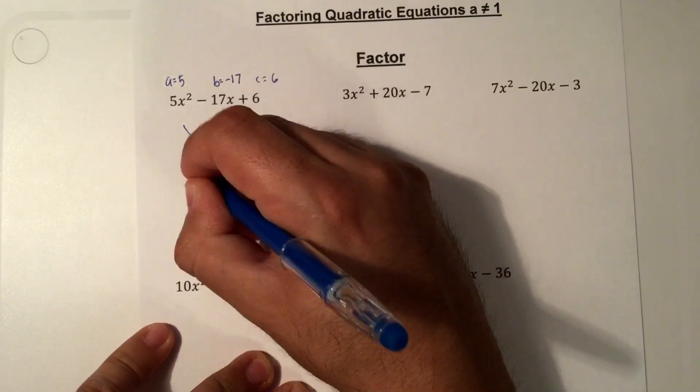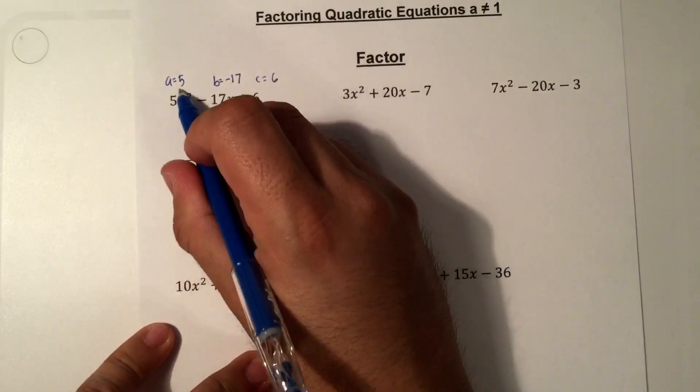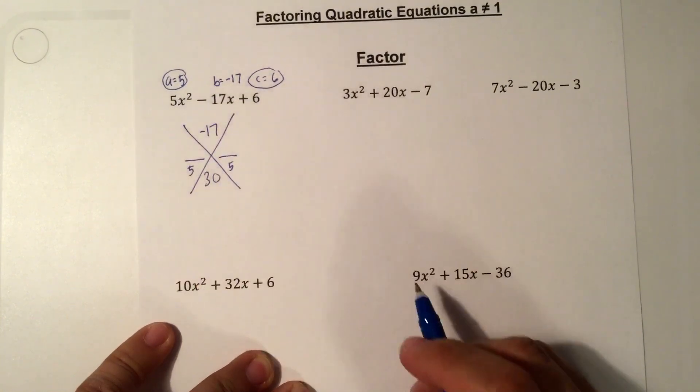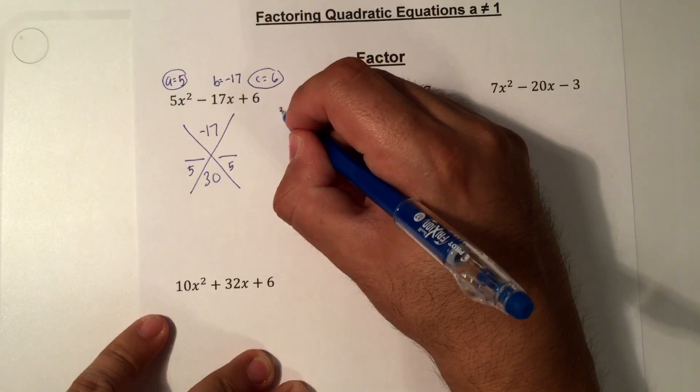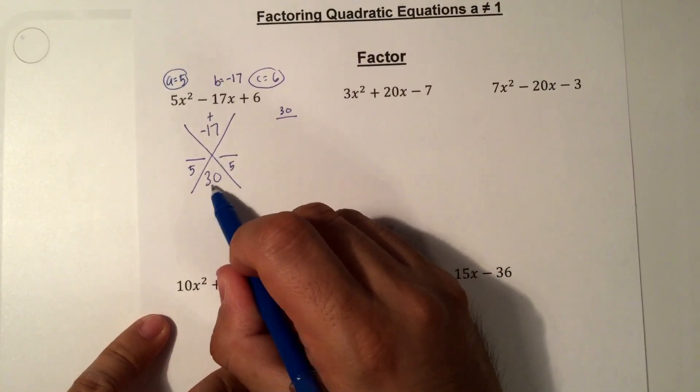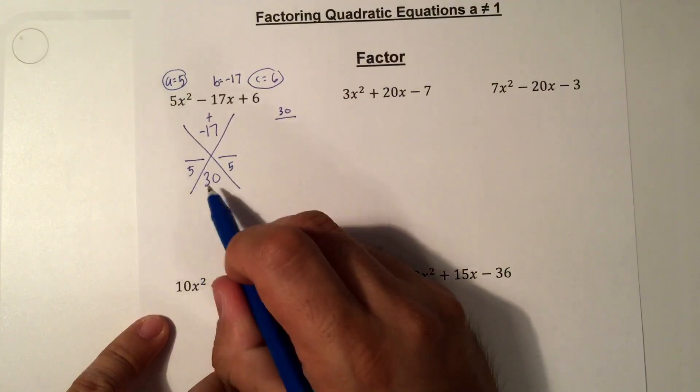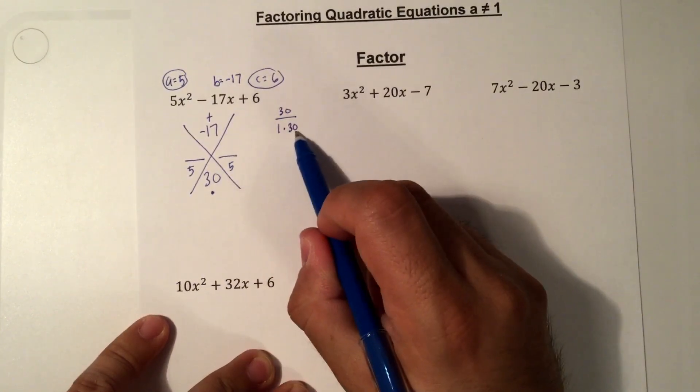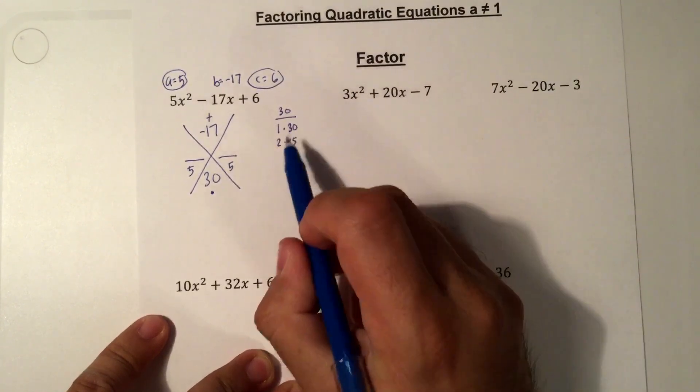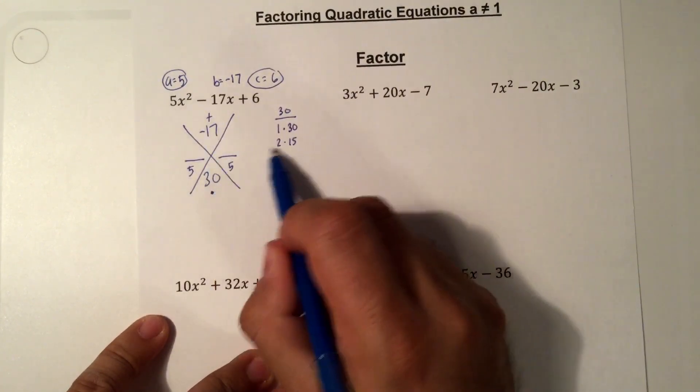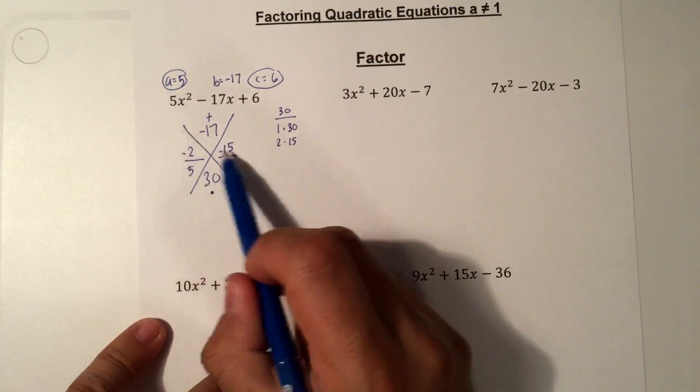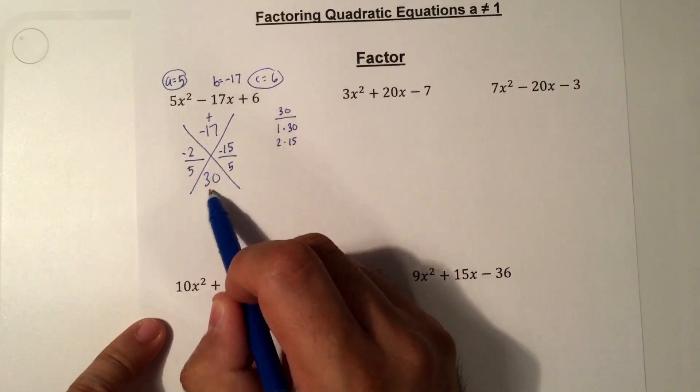Now we draw the x for the x method. b is negative 17. We divide by a, which is 5. And to get the bottom number, we multiply a times c. So 5 times 6 is 30. If you have a hard time finding factors, I just write out a little factor thing here. I start with 30 on the bottom. I need two numbers that add to negative 17 and multiply to 30. So I figure out the factors of 30. 1 times 30 is 30. 1 plus 30 is 31. That's not right. 30 minus 1 is 29. So that doesn't work. 2 times 15. 2 plus 15 is 17. So now I know it's 2 and 15. It's negative 17, so in order to make this negative, I make them both negative. Negative 2 minus 15 is negative 17. Negative 2 times negative 15 is positive 30.